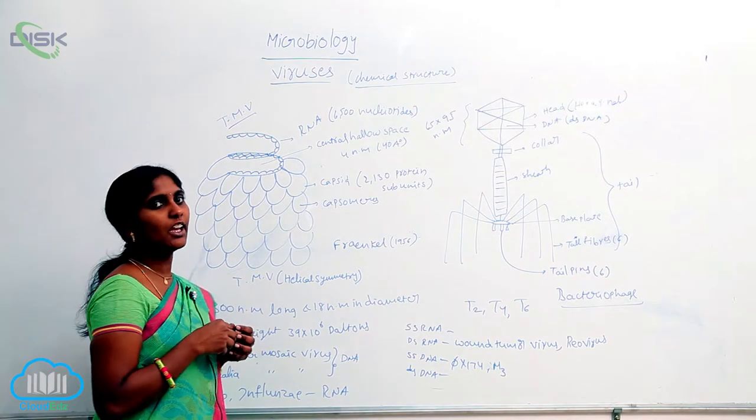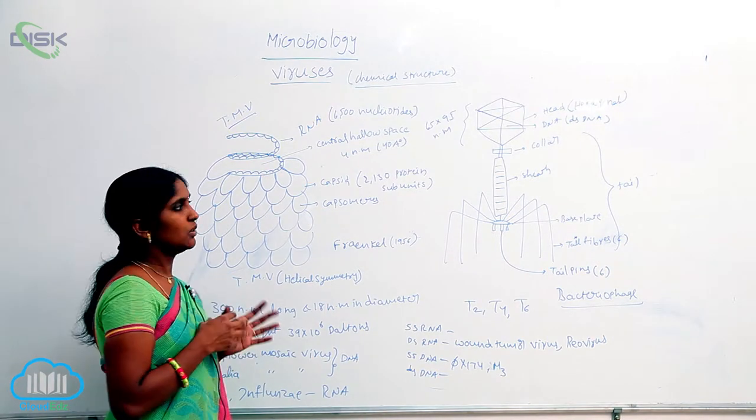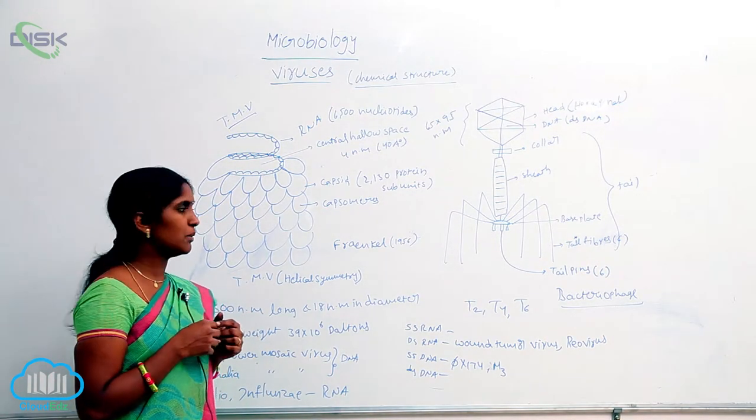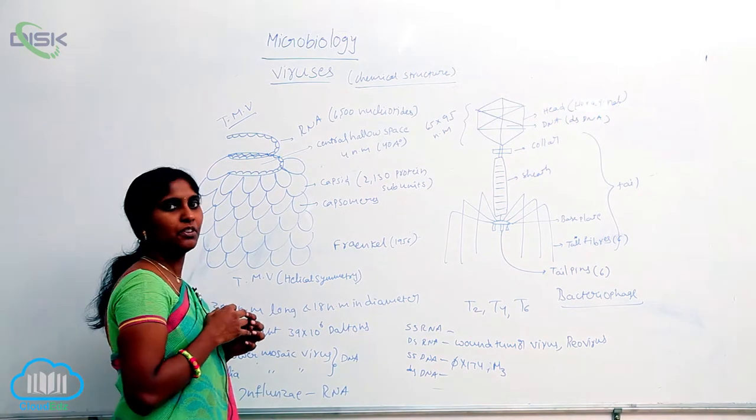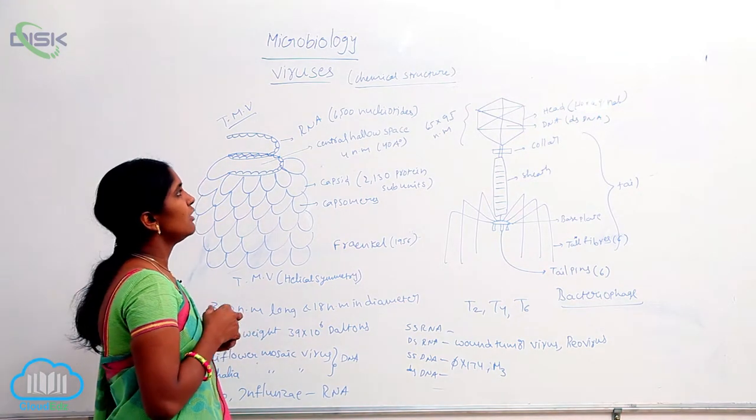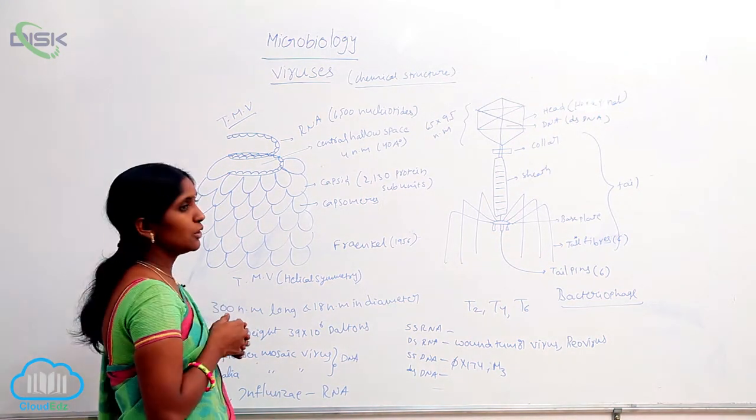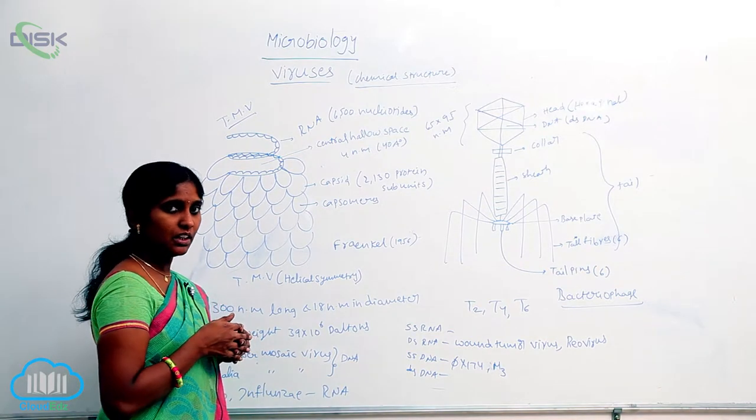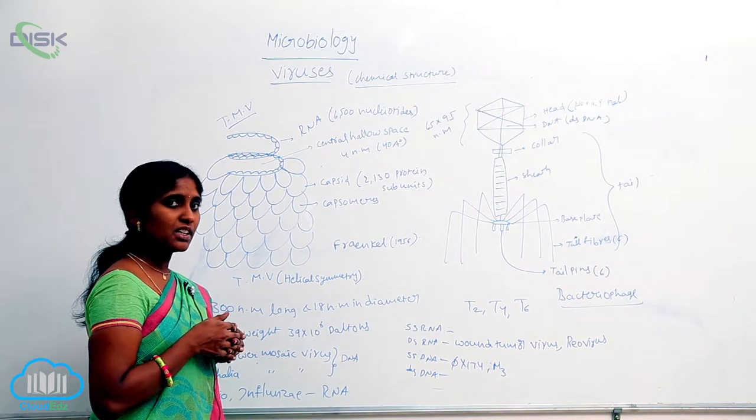So, now you come to the TMV. The TMV structure given by the scientist Frankel, 1956. According to him, it is a nucleoprotein. Here, the nucleic acid is RNA.